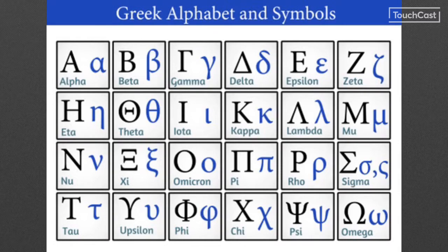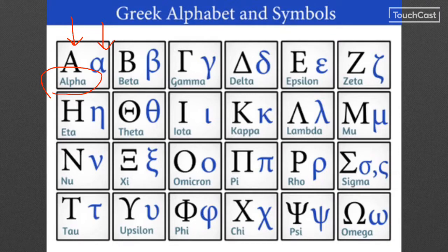So let's look at the Greek alphabet. This is a chart that shows the uppercase and lowercase of each Greek letter as well as the name in Greek for that particular letter. Some of their letters look like our letters — that's because the Ancient Greek alphabet became the basis for the Roman alphabet, which is the basis for our alphabet. So a lot of the letters look the same.